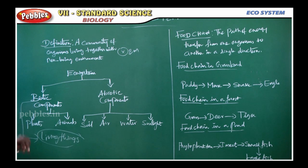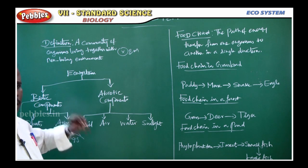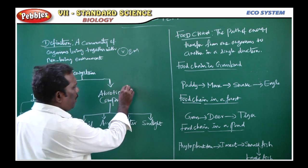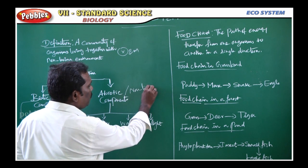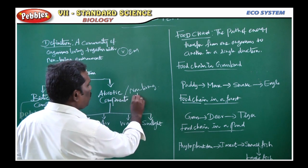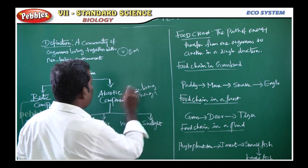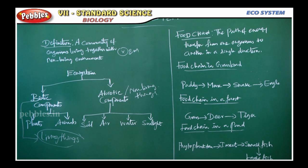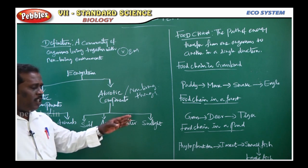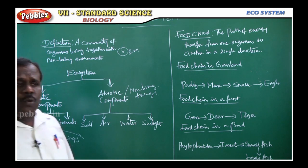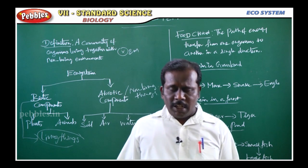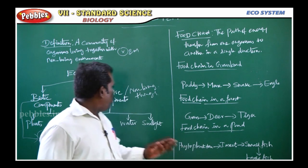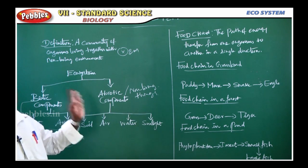Next, abiotic component. Abiotic component means non-living things. Non-living things are considered as abiotic component — soil, air, water, sunlight. The climatic factors are also included as abiotic component.